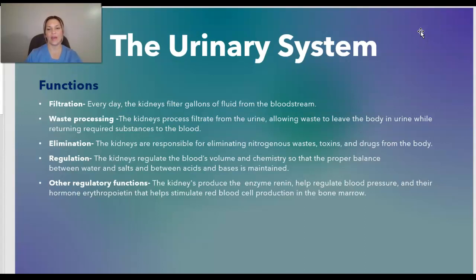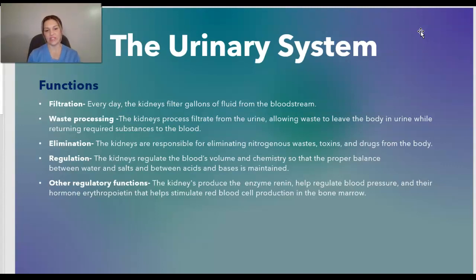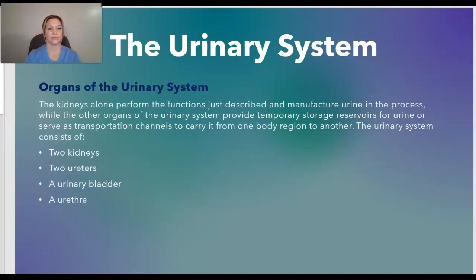Regulation: the kidneys also help to regulate the blood's volume and chemistry so that the proper balance between water and salts and between acids and bases is maintained. Other regulatory functions include the kidneys helping to produce the enzyme renin to help regulate blood pressure, and the hormone erythropoietin, which helps to stimulate red blood cell production in the bone marrow.